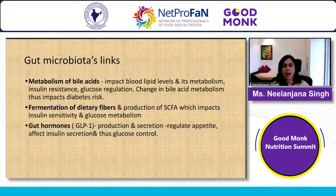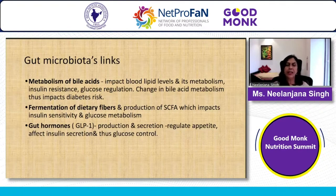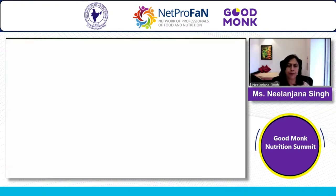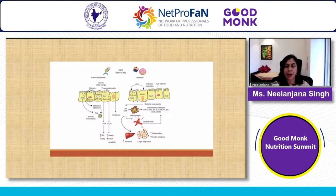In diabetes, the microbiota links are also strong. Metabolism of bile acids impacts lipid levels and increases diabetes risk. Fermentation of dietary fibers producing short-chain fatty acids has a role in insulin sensitivity. Gut hormones like GLP-1 and PYY regulate appetite and insulin secretion, thus glucose control. A fiber-rich diet promotes short-chain fatty acid production and gut hormones that increase satiety and insulin sensitivity, while a high-fat diet promotes lipopolysaccharides that increase inflammation and insulin resistance in adipose tissue and liver.